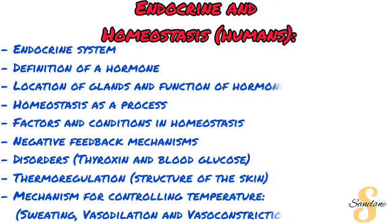The last topic in Paper 1 is the endocrine system and homeostasis in humans. Start with the endocrine system and make sure you are comfortable with the definition of hormones, since it comes up again here. Look at the location of glands, their functions, and their hormones. Then study the homeostasis process — the factors and conditions that affect homeostasis — and the negative feedback mechanism, including disorders like thyroxine imbalance and blood glucose. Definitions are crucial here; for example, explaining blood glucose requires knowing its definition.